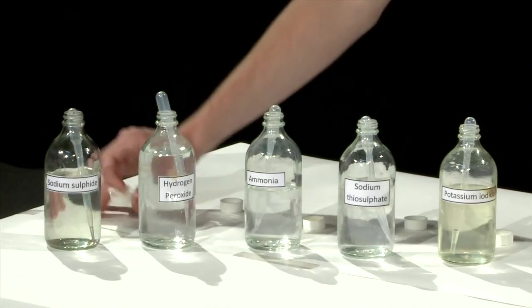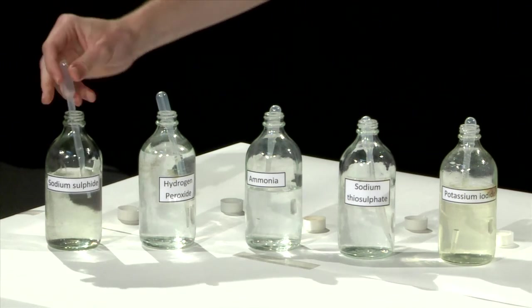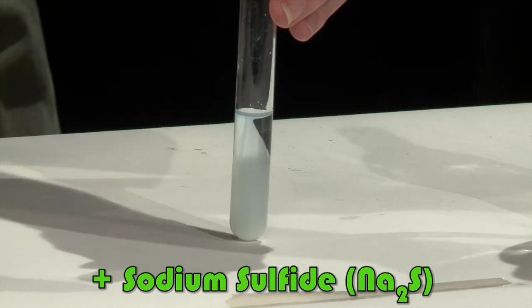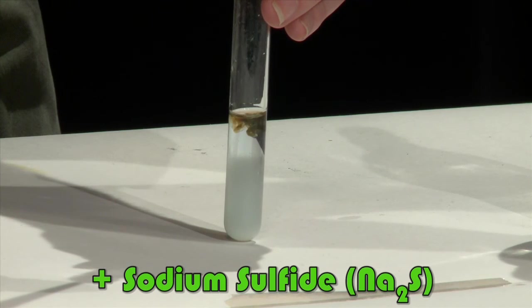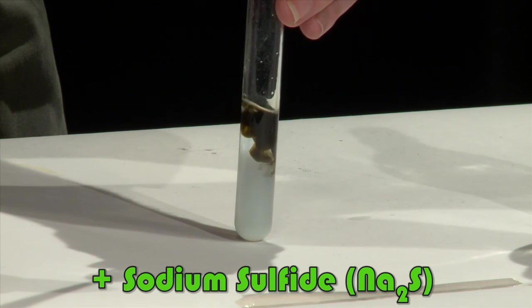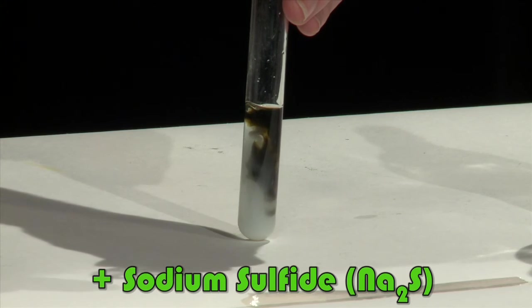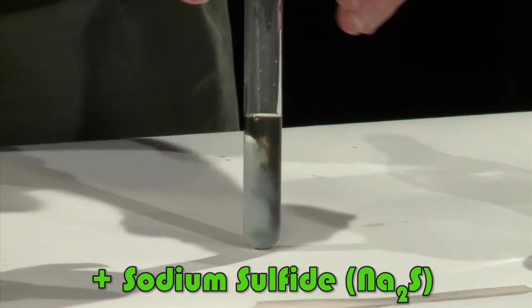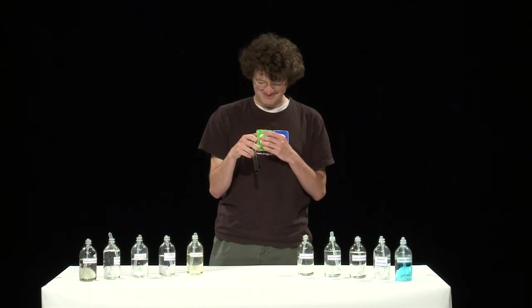Now finish off the experiment by adding 5 drops of sodium sulfide. This chemical reaction is a lot easier to see. The sodium sulfide is forming a black precipitate of copper sulfide. Ammonia is also being released. Don't panic, John. It's supposed to smell that bad.